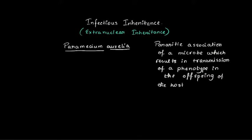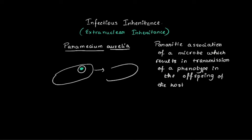So let's say this is the organism — a parasite is residing inside the organism, and when the host reproduces and makes a copy of itself, this parasitic organism transmits some phenotype onto the progeny that makes the host into a particular phenotype. This is the overview of infectious inheritance.